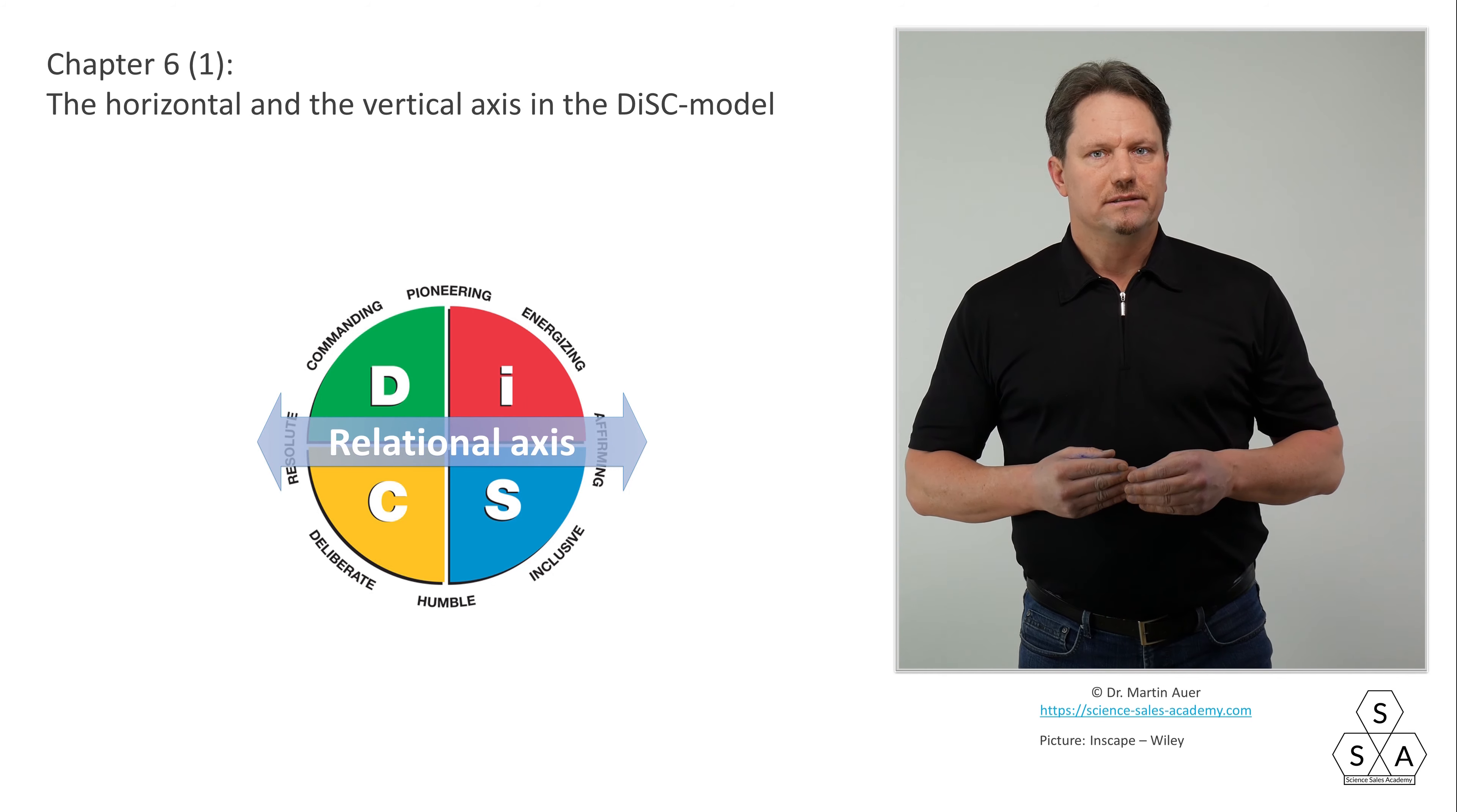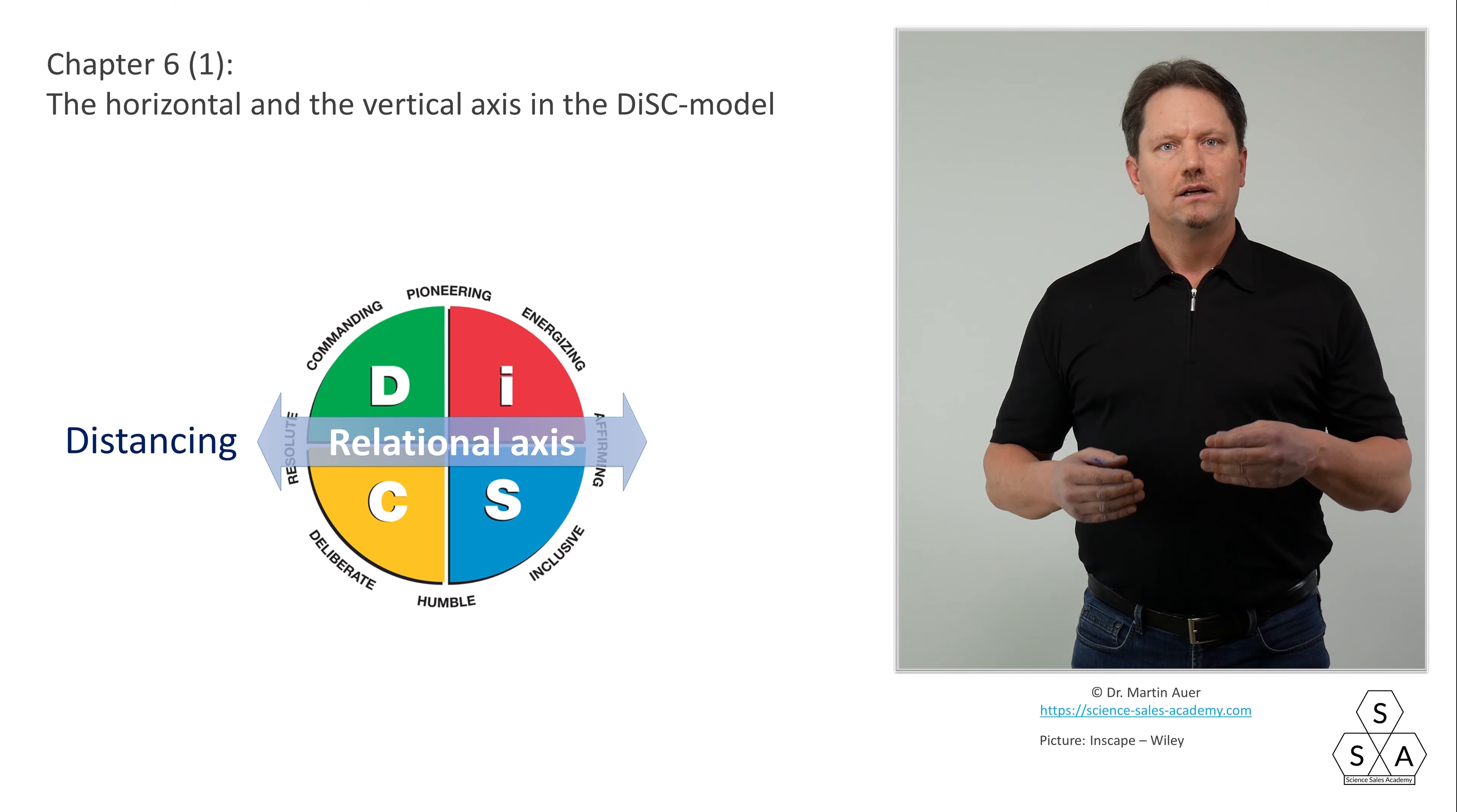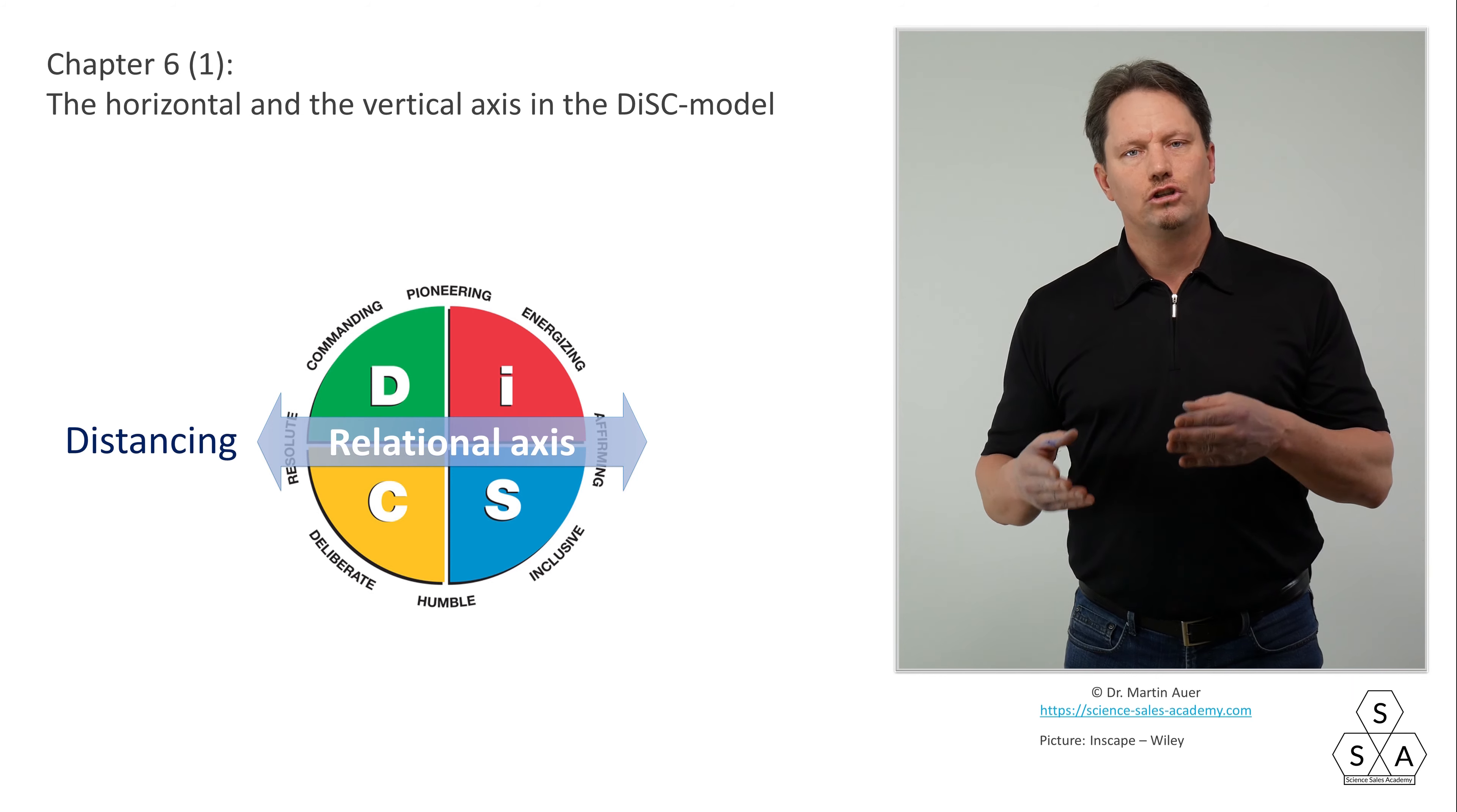The understanding of these two axes is an important precondition for the following steps, for example when it comes to identifying the four basic types directly out of daily life by observation. The horizontal axis is the so-called relational axis or axis of cooperation or interpersonal axis. In any case, this axis indicates how much a person strives to ally and cooperate with other people. At the left end of this relational axis, at 9 o'clock position, are those people who feel no need to ally with other people. Persons at this extreme point strive for distance to other people rather than fraternizing and cooperating.